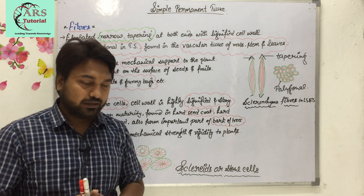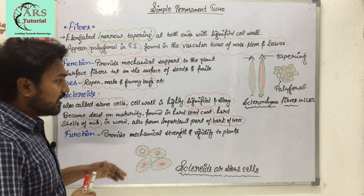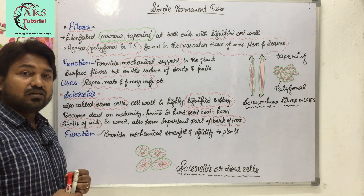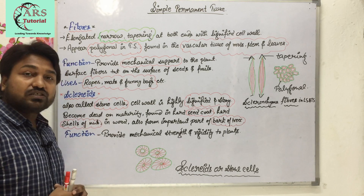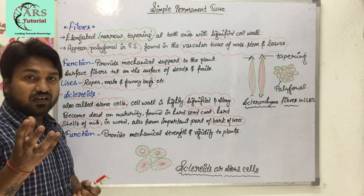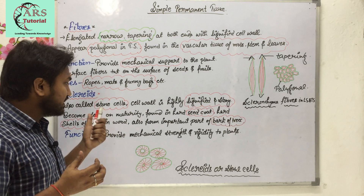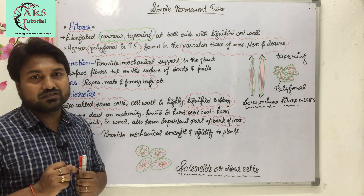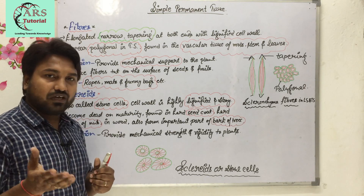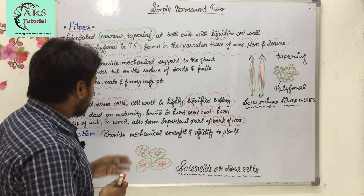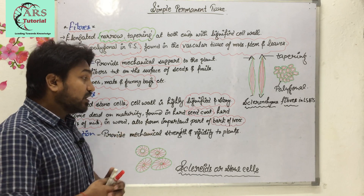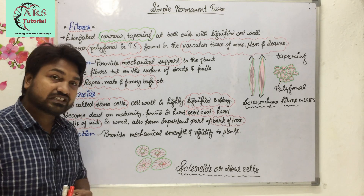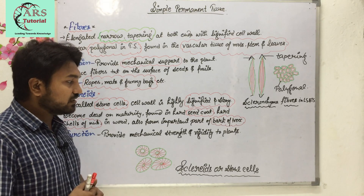Sclereids become dead on maturity and are found in hard seed coats and hard shells of nuts. You can imagine that the outer covering of nuts is made up of sclereids. Similarly, the outer covering of coconut is made up of sclereids. Sclereids also form an important part of the bark of trees.